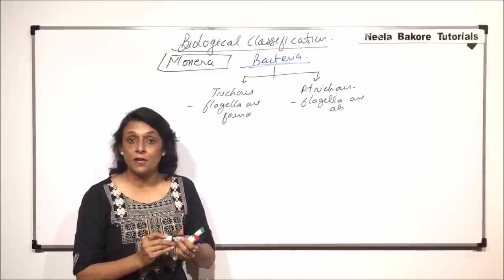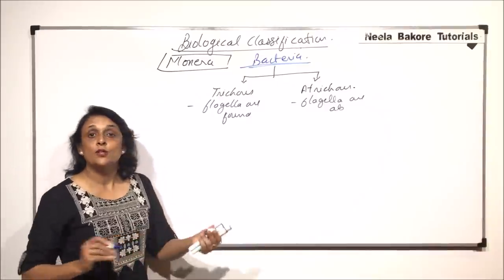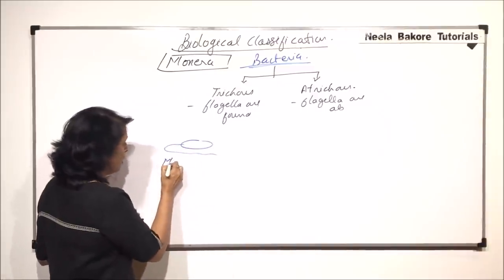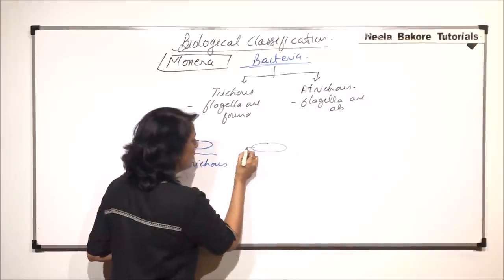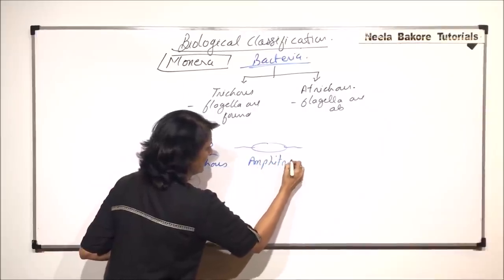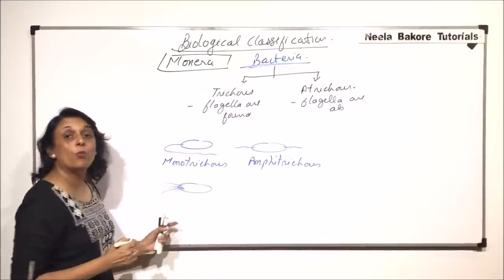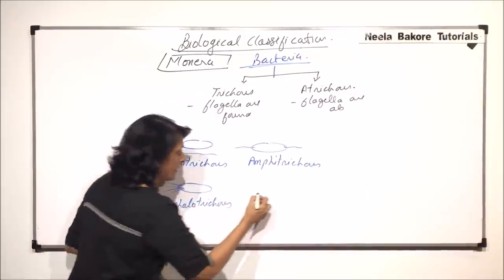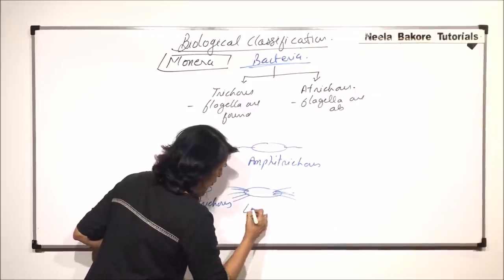If there are no flagella, then there is no further classification. But if flagella are present, then how and where those flagella are? If a bacterium has only one flagellum, then that would be called monotricus. If a single flagellum is found at both the ends, then those would be called amphitricus. If many flagella are found only at one end, then they are called cephalotricus. And if there are clusters of flagella found at two ends, then they are called lofotricus.